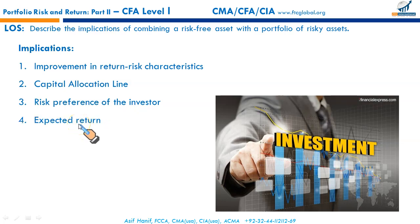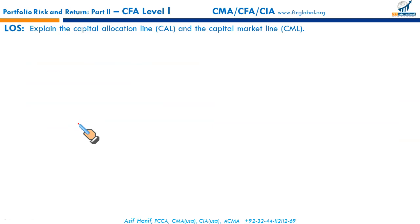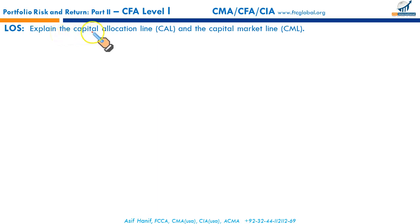Then, what about the expected return of the composite portfolio that contains both risky assets and risk-free assets? We will discuss it through an equation in subsequent slides. The next learning outcome says: explain the capital allocation line and the capital market line.